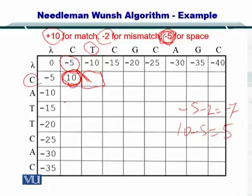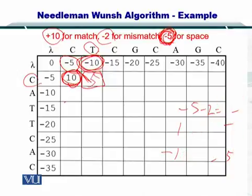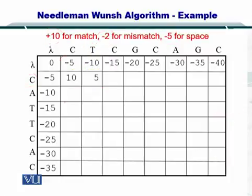Here on top, it is -10. The gap penalty is -5. This will be -15. The maximum from these three is obviously 5, so we will put 5 here. Therefore, we have computed two elements in the matrix.